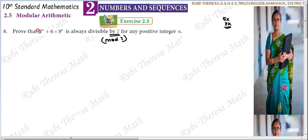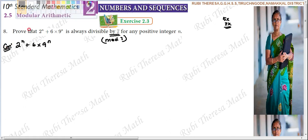So now, 2 power n plus 6 into 9 power n — let us consider this. 2 power n plus 6 into 9 power n, this is the dividend. Now if we split this, first we can solve for 2 power n, then 6 into 9 power n. Why do we split this? Because they are not the same — they are not the exact same numbers.